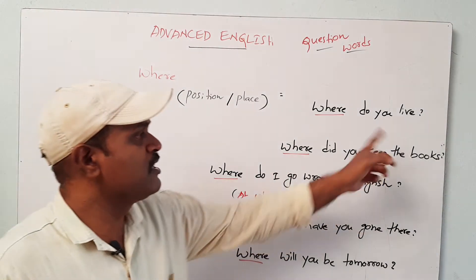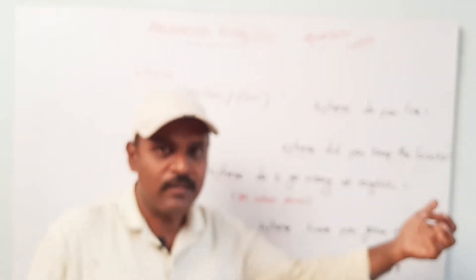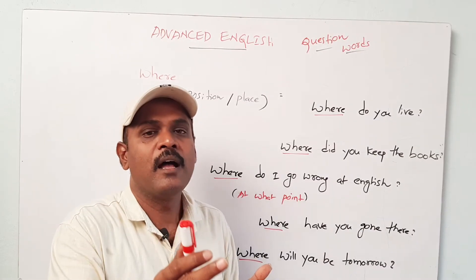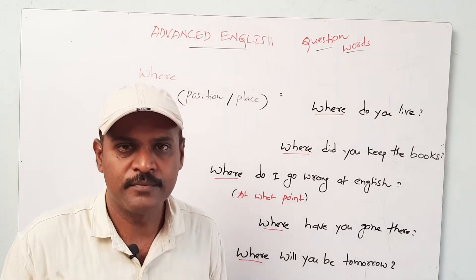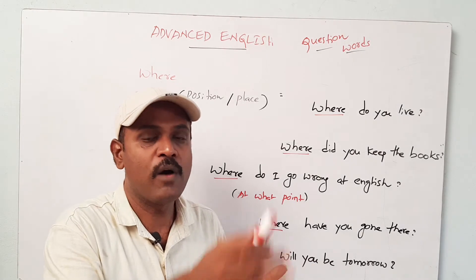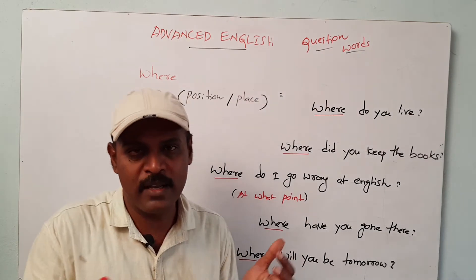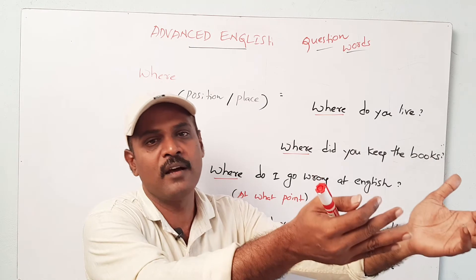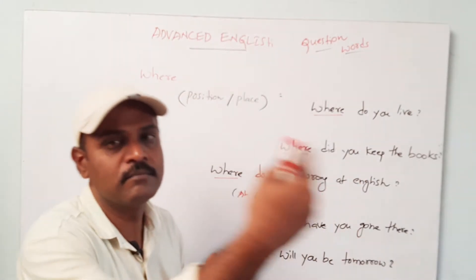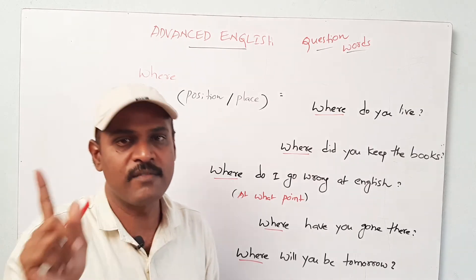One more thing here — 'live'. As a verb, 'live' means staying or dwelling. As an adjective, 'live' means having life, or continuing. For example, when a cricket match is going on, it is a live match. While the match is going on, we are watching it live. So 'live' can be a verb or an adjective.